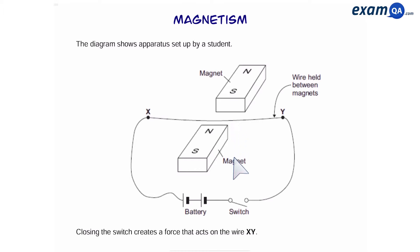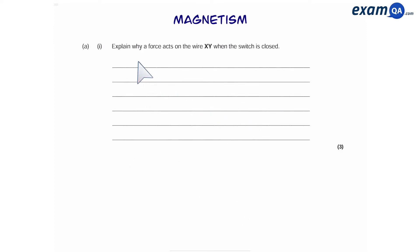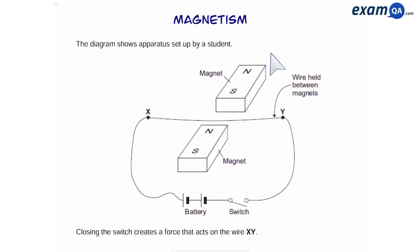Closing the switch creates a force that acts on the wire XY. So here's the first question. Explain why a force acts on the wire XY when the switch is closed. Let's take a look at what's exactly happening here. Between the two magnets we're going to have a magnetic field and remember this always points from the north pole to the south pole.